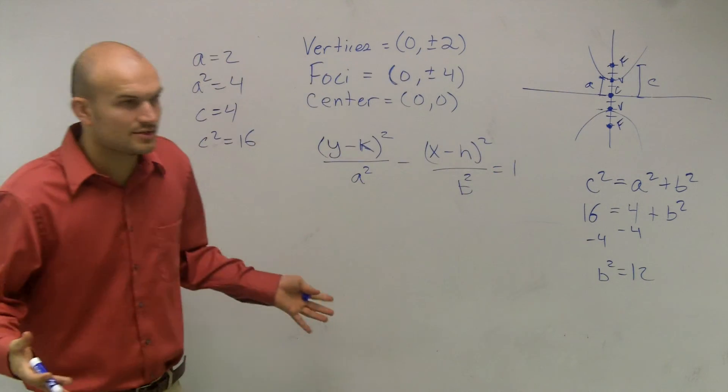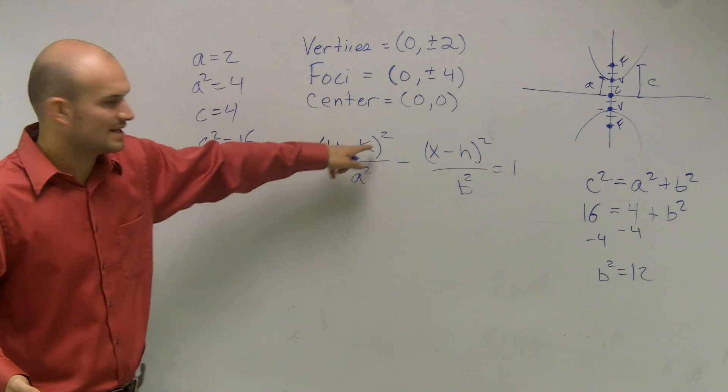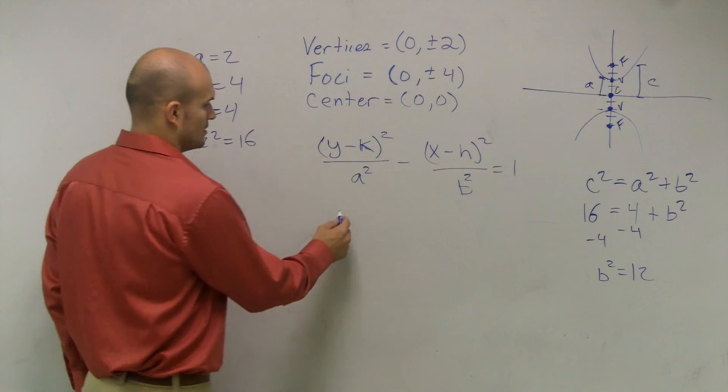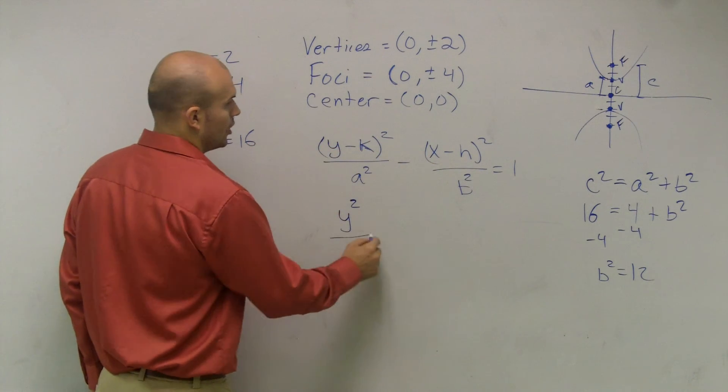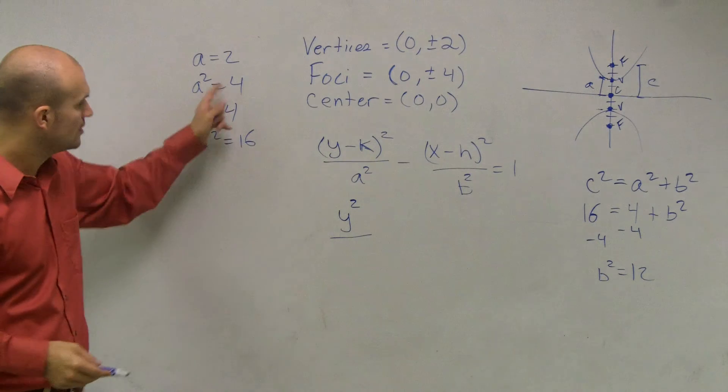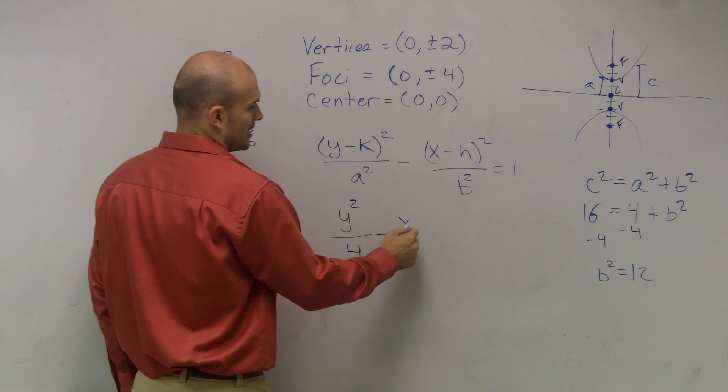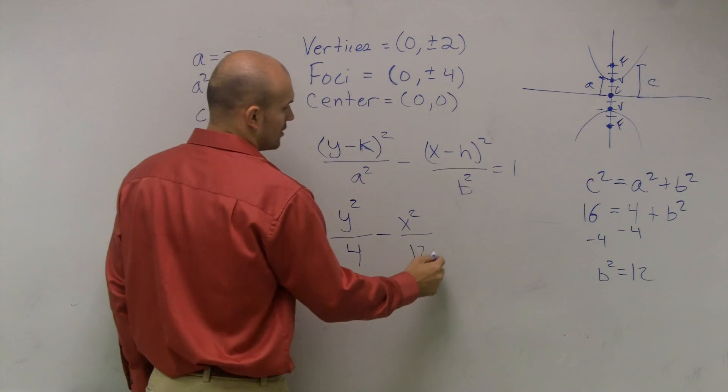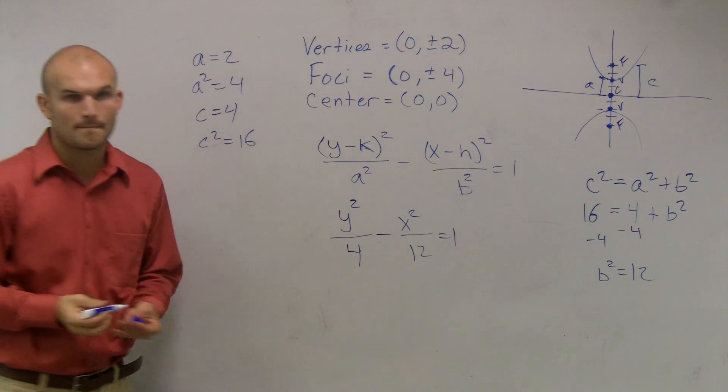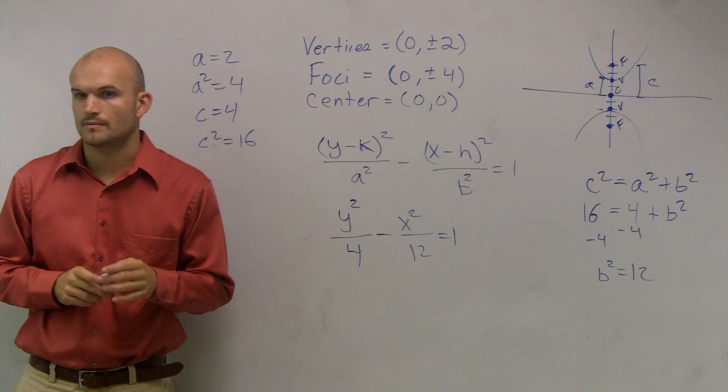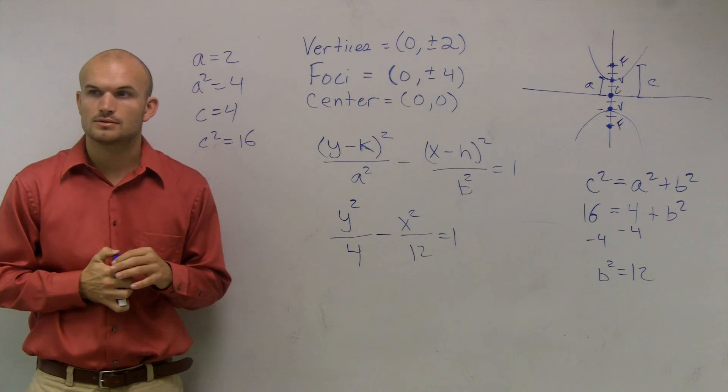And remember, we're just trying to find the standard form. So my k, my h and my k are both 0. So it's y² / 4 - x² / 12 = 1. Okay, questions? Good.